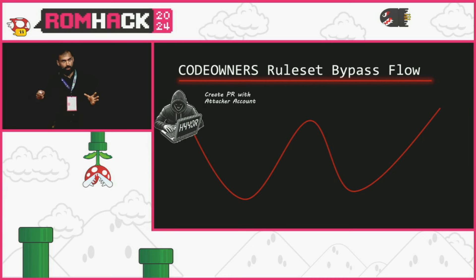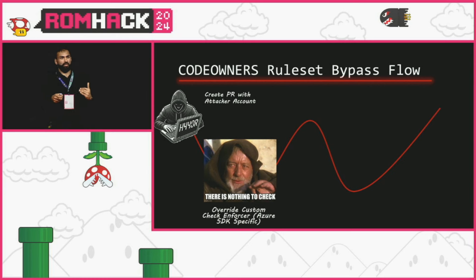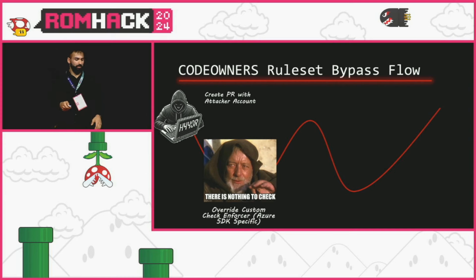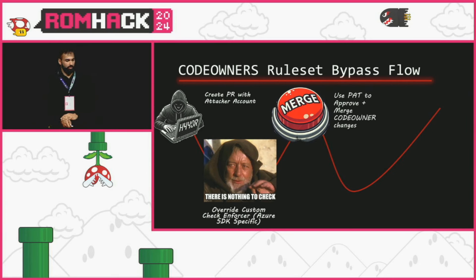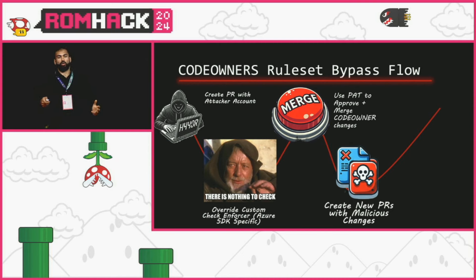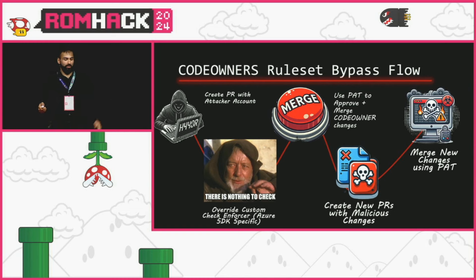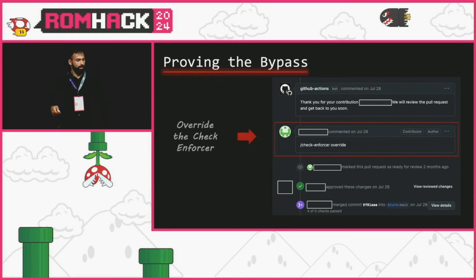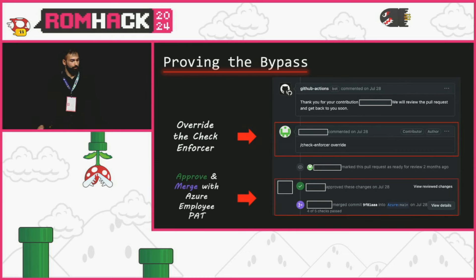This is how the bypass worked: I can't create and approve and merge my own pull request because of other protection rules, but since it's a public repo I can make a pull request from my attacker account. This repository also used a check enforcer linked to branch protections requiring unit tests to pass, but there was a bypass: commenting 'override' would mark you as good to go. The final step was using the token to approve and merge. On July 28th, I approved and merged using that token I'd controlled for a few months.